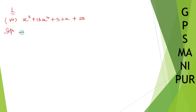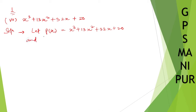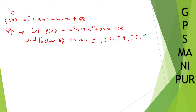Solution. Let p of x is equal to x cubed plus 13x squared plus 32x plus 20. Now, factors of the constant 20 are plus minus 1, plus minus 2, plus minus 4, plus minus 5, plus minus 10, and plus minus 20.